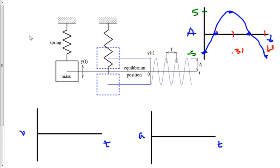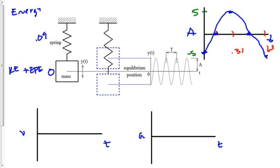On this side we'll keep track of the energy involved. At this position we're at zero, and we have kinetic energy plus elastic potential energy, because the spring is stretched from the equilibrium position. We know that stretch is 0.098 meters or 9.8 centimeters. We're going to call this zero for gravitational potential energy, but not zero for elastic potential energy.